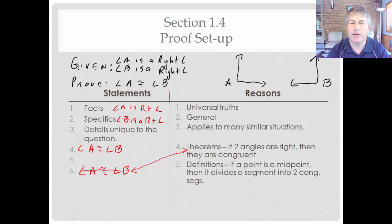We'll also use definitions over here. If a point is a midpoint, then it divides a segment into two congruent segments. So here is on the right hand side, we're going to write those theorems and those definitions and those postulates that we have committed to memory. Over here on the left hand side, we're not going to put, since angle A and angle B are right angles, and we know right angles are congruent, then angle A must be congruent to angle B. Those aren't reasons. We're not going to put that over here. That's a paragraph proof. That's something different.